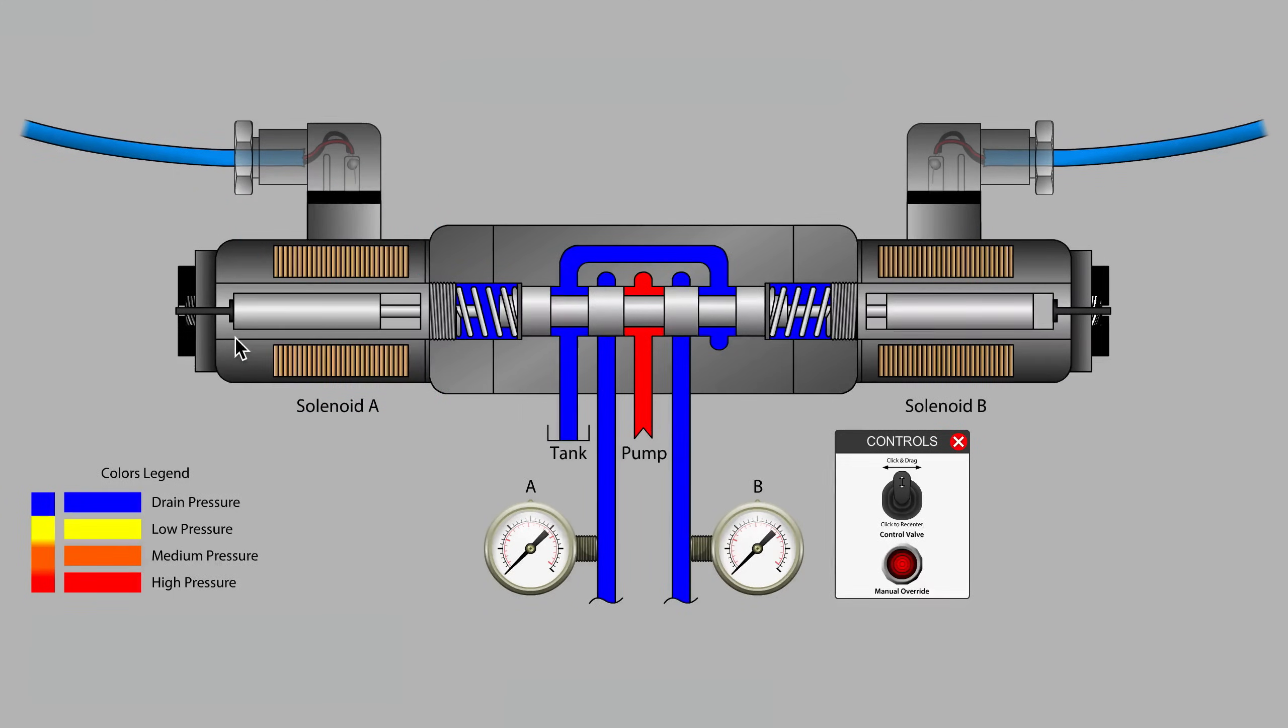Let's start all over again. Before energizing solenoid A, observe that the left armature has been moved all the way left in the valve tube, and a gap is present between the pushpin on the left side of the spool.